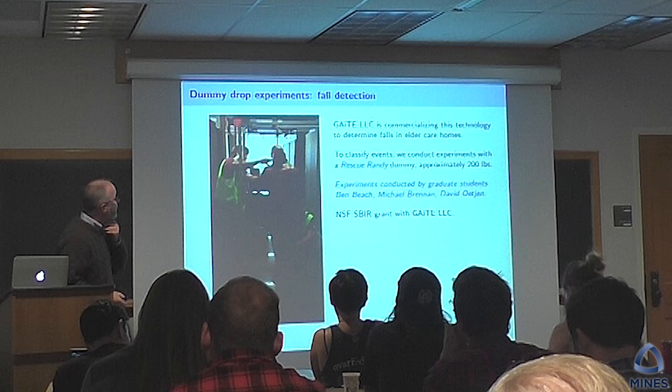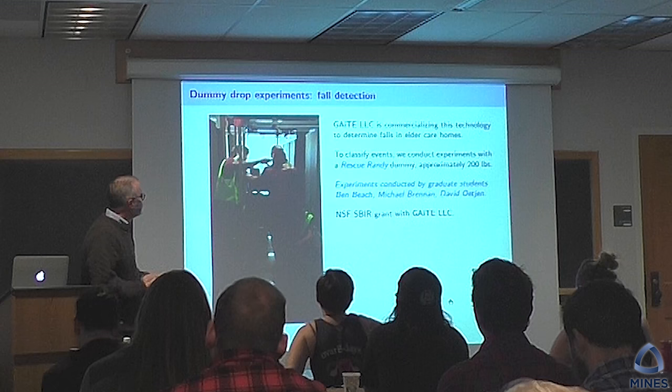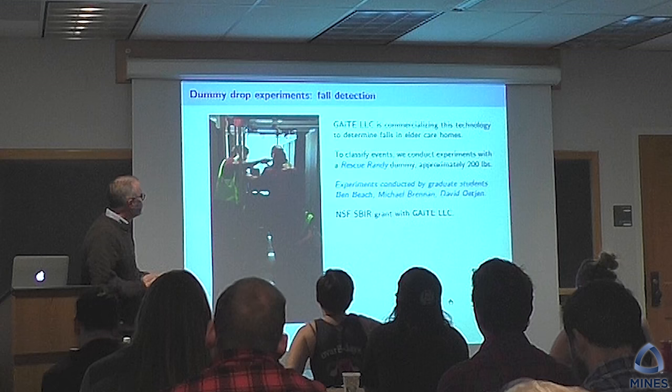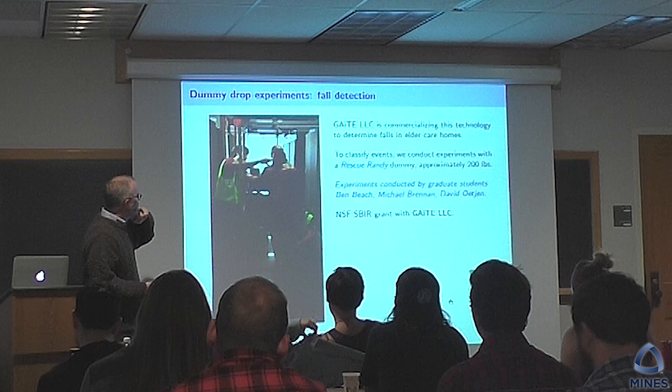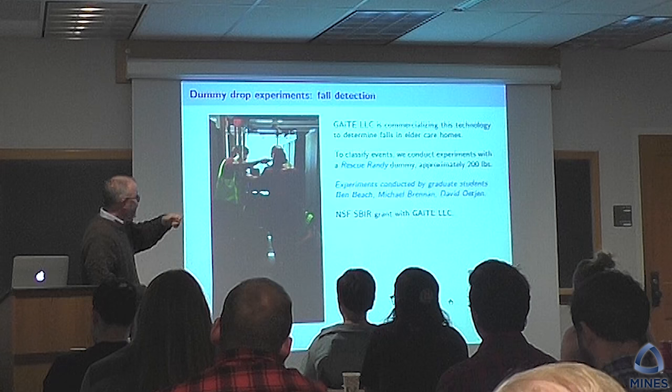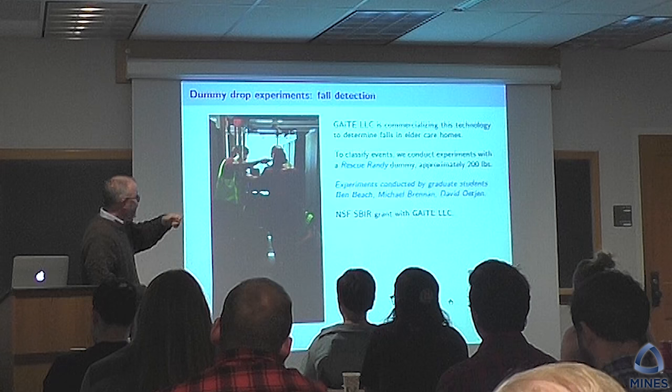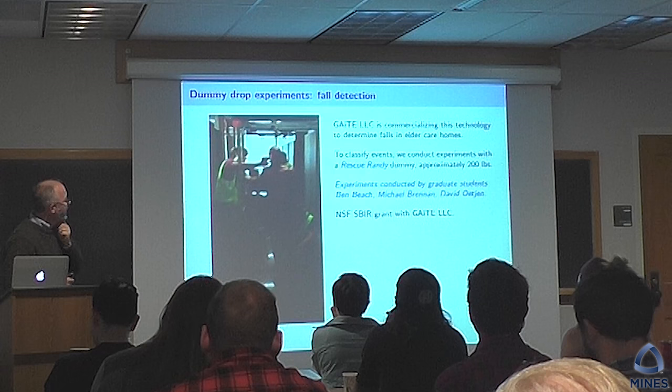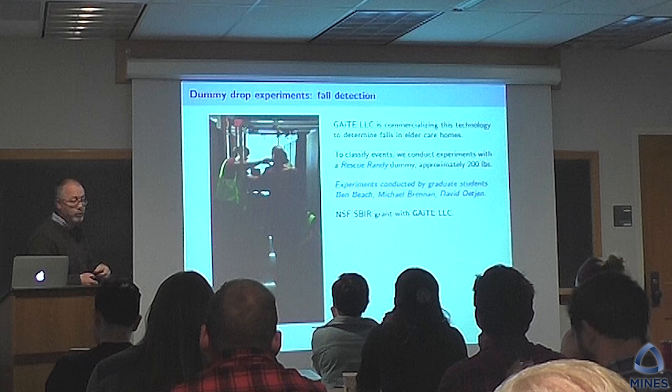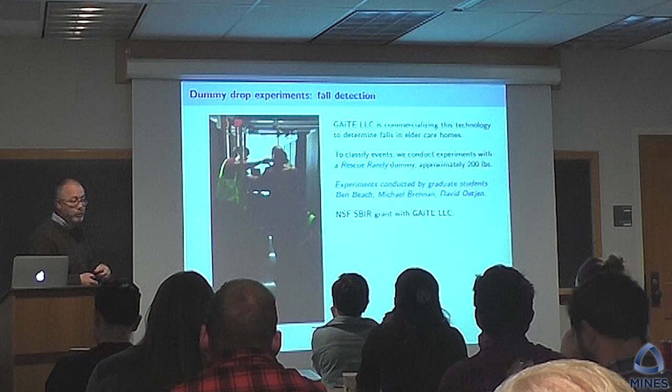This company trying to detect falls in nursing homes asked us to perform experiments with Rescue Randy — a 200-pound dummy rigged up on an apparatus. The best way to drop him is to hook him up with a piece of parachute cord and then snip the cord — there he goes to the ground. We want to see what this signature looks like compared to, say, a book falling or a door slamming shut or people just walking down the hallway.